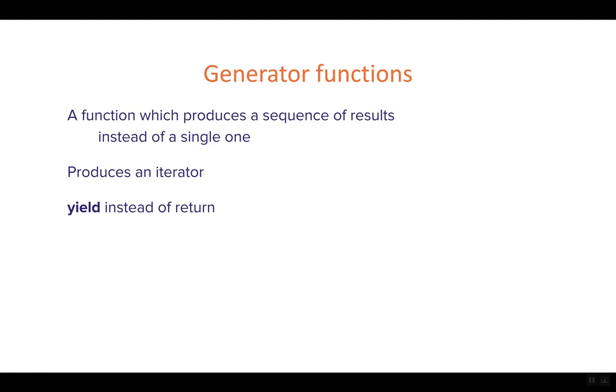When we want to produce a value with the generator, we provide that value with the yield keyword. When the yield is reached, a value is produced and the execution of the generator function is paused until the next value is required.